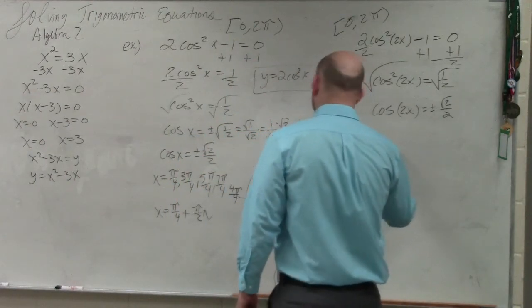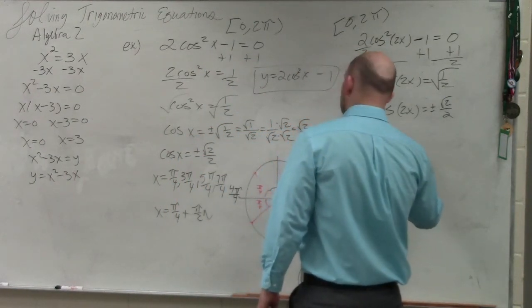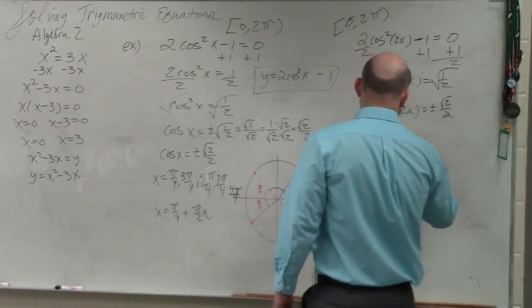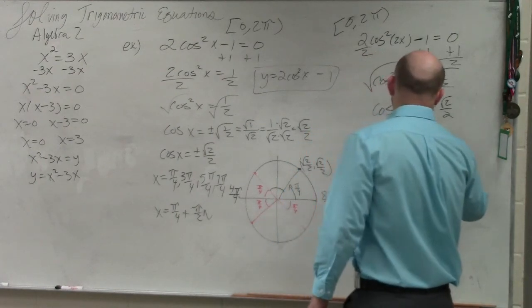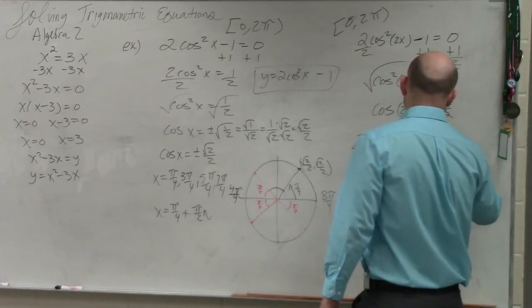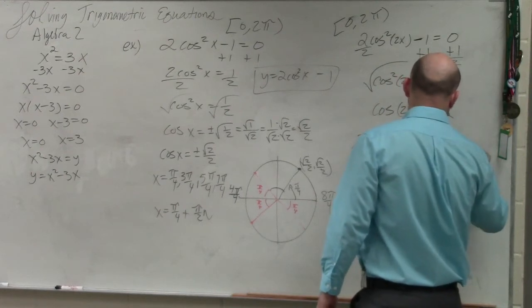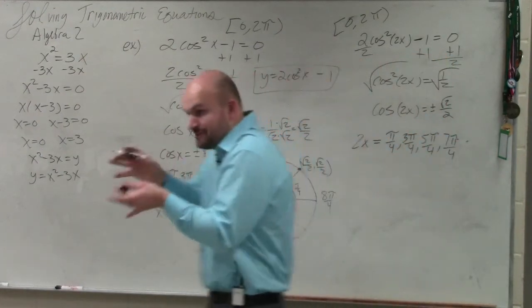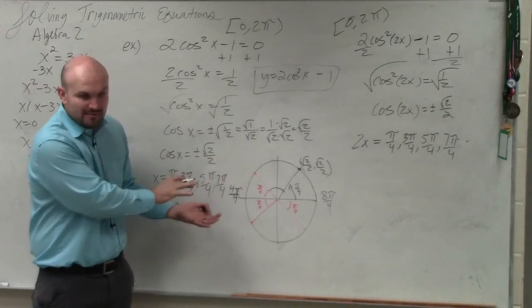So you'll just say 2x equals pi over 4, 3 pi over 4, 5 pi over 4, and 7 pi over 4. OK? Those are my answers, right? That equaled x. And this is a problem.